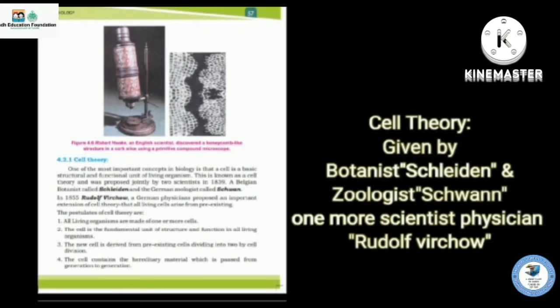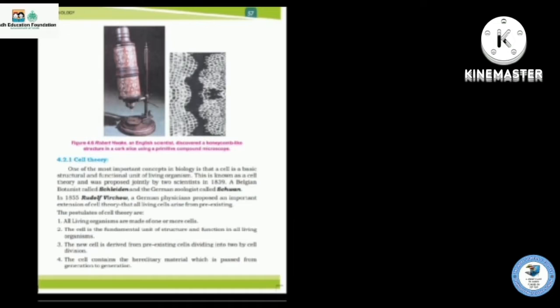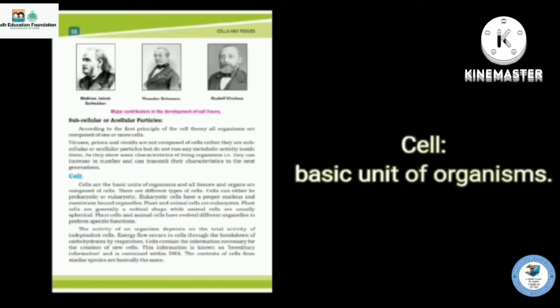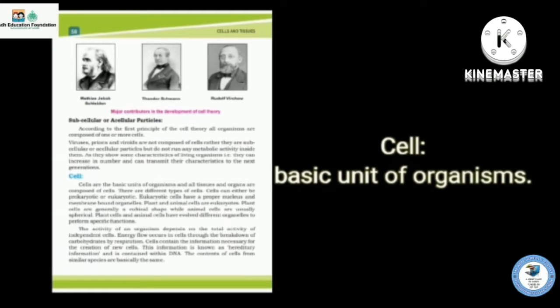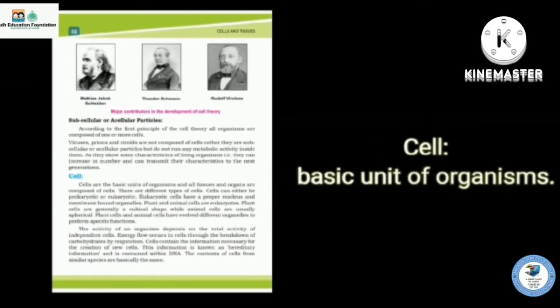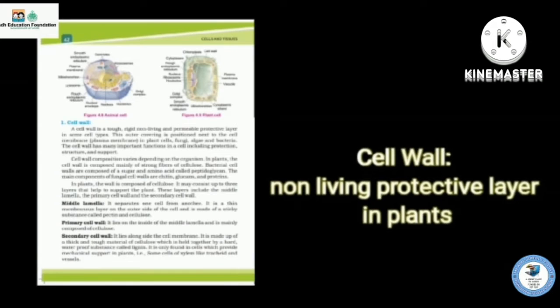The next topic is cell theory given by three scientists, Schleiden, Schwann and Rudolf Virchow. Cell is the basic unit of organism. All things are made up of cells. There are two types of cells, eukaryotic cell and prokaryotic cell.